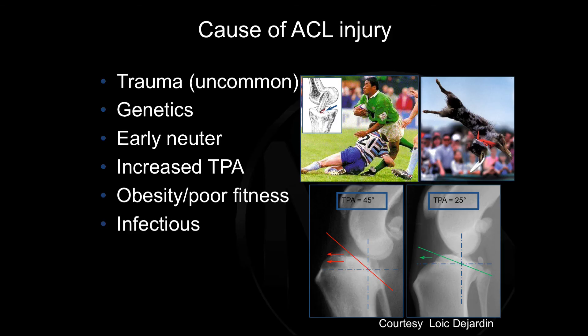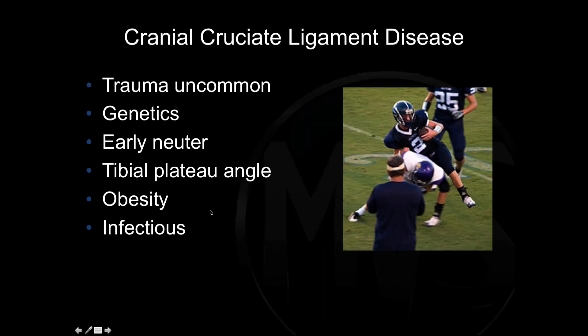Why might this ligament tear? In people, one of the most common causes is an acute injury, but in dogs trauma is a less common cause — we more often see degenerative tears. Other factors that can influence ACL tearing include genetics, early neuter, and an increased TPA. These two x-rays illustrate this: the red line shows a tibial plateau angle of 45 degrees and the green line shows 25 degrees — the dog with the steeper angle is much more likely to injure its ACL. Obesity, poor fitness, and infectious causes may also contribute.